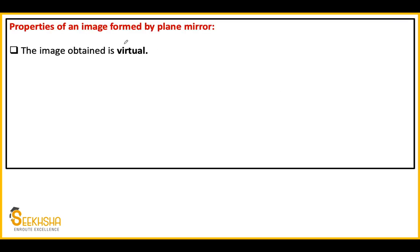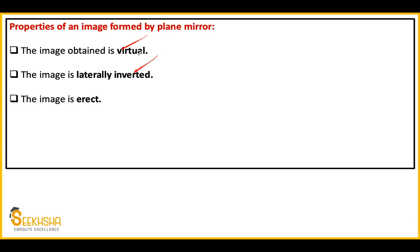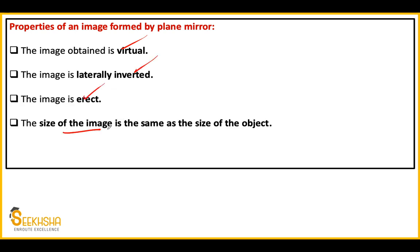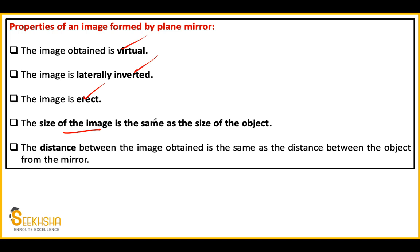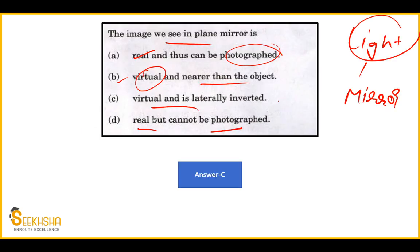The properties of a plane mirror: virtual image, laterally inverted image, erect, and the size of the image is the same as the object. If you are standing in front of a plane mirror, you will see yourself at your actual size. The distance of the image from the mirror is the same as the distance of the object from the mirror. Real is not virtual — so options A and D are wrong, and option B is wrong because the distance is the same, not nearer.